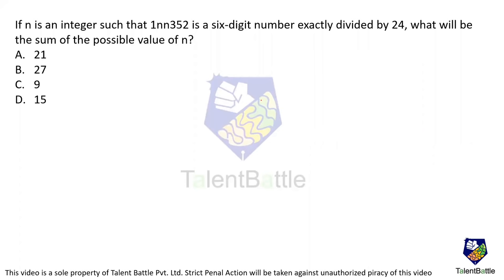If n is an integer such that 1nn352 is a 6-digit number exactly divisible by 24, what will be the sum of possible values of n? The number is exactly divisible by 24, so let me split 24 in terms of its factors first, which is 8 and 3. The number should be divisible by both 8 and 3, then it will be divisible by 24.